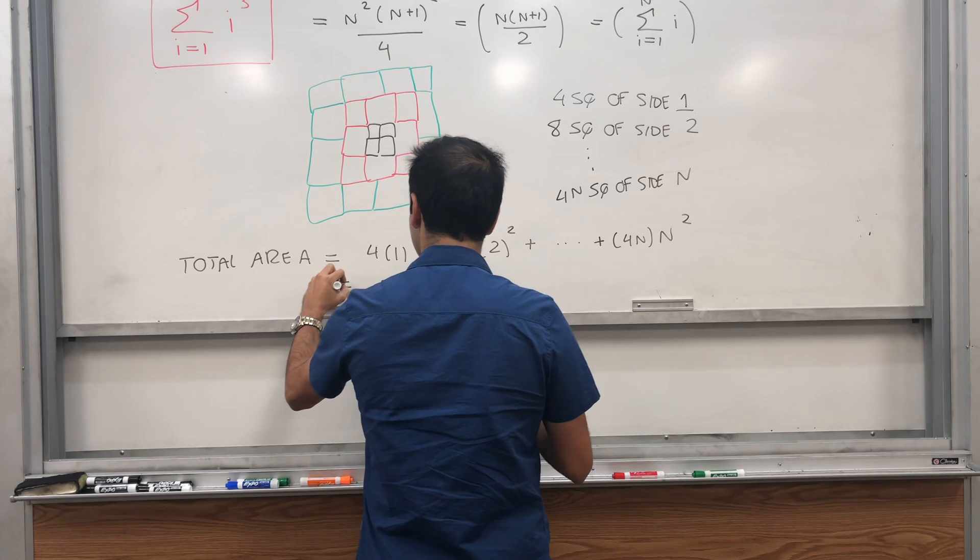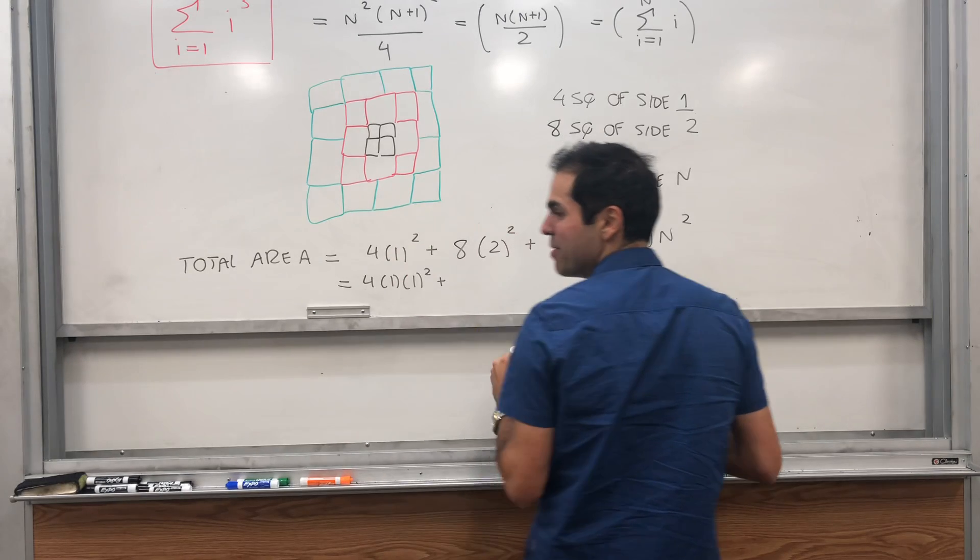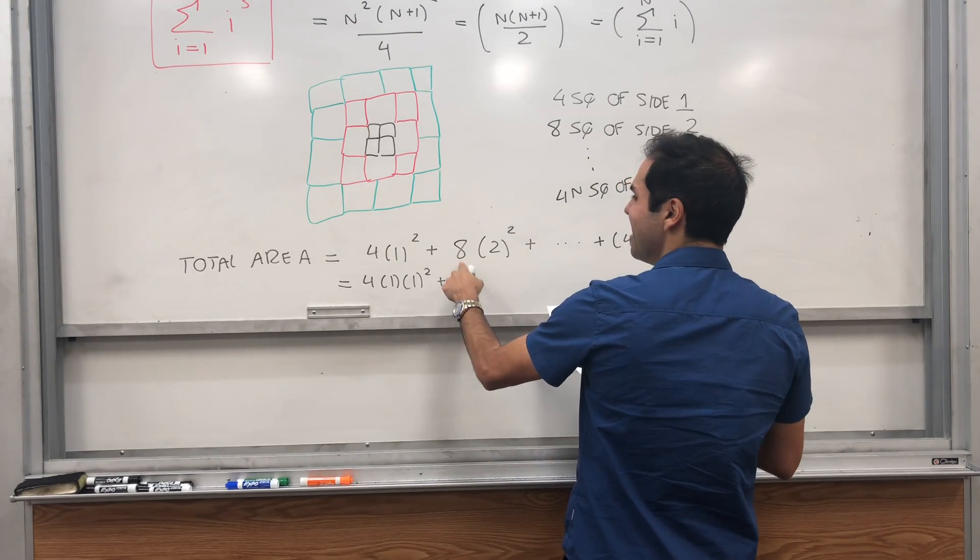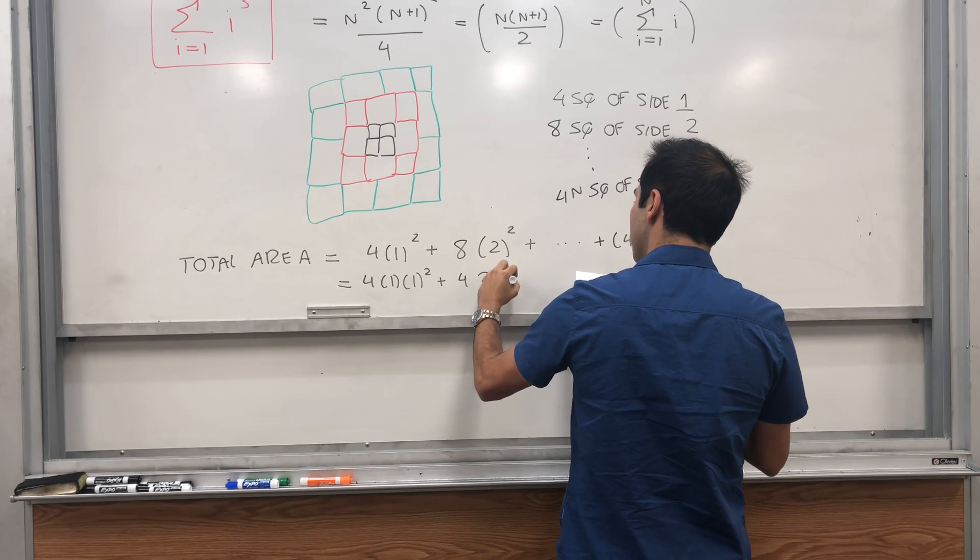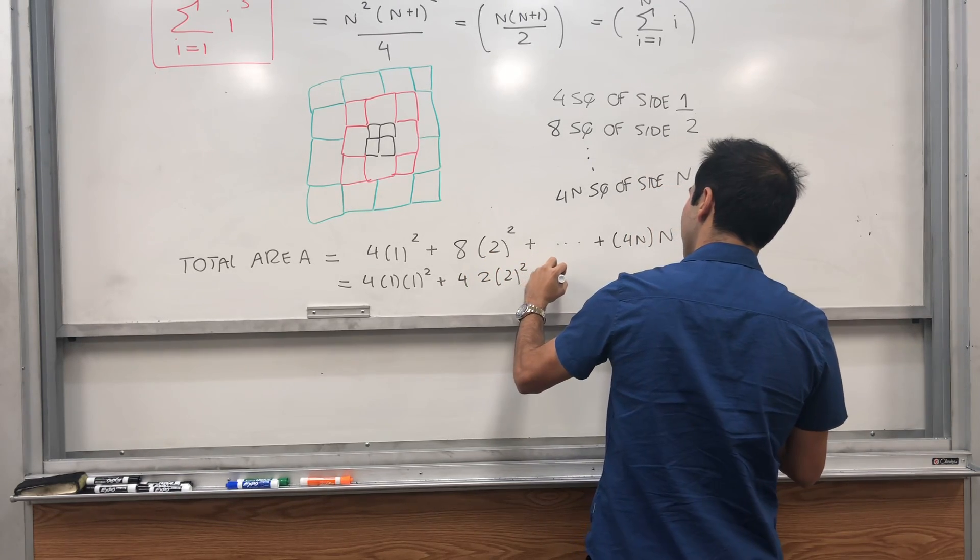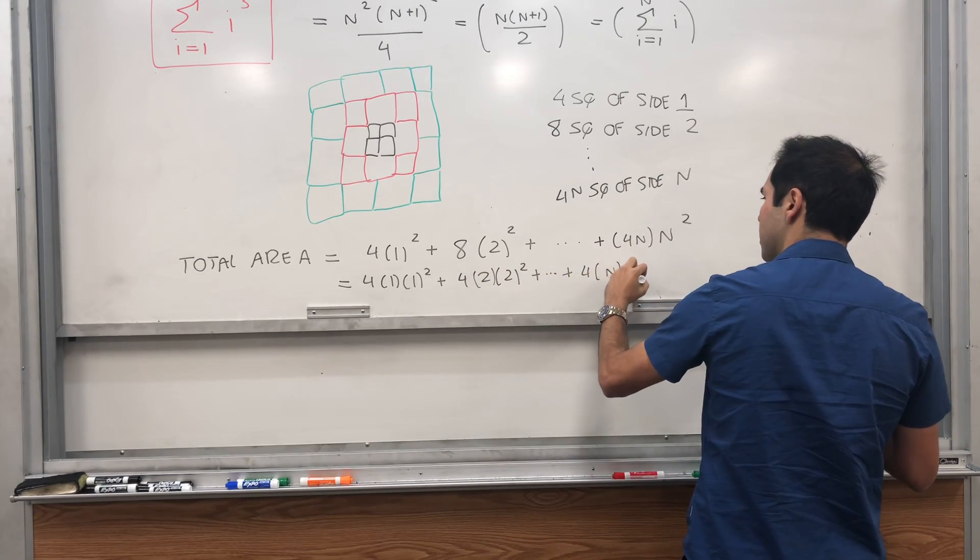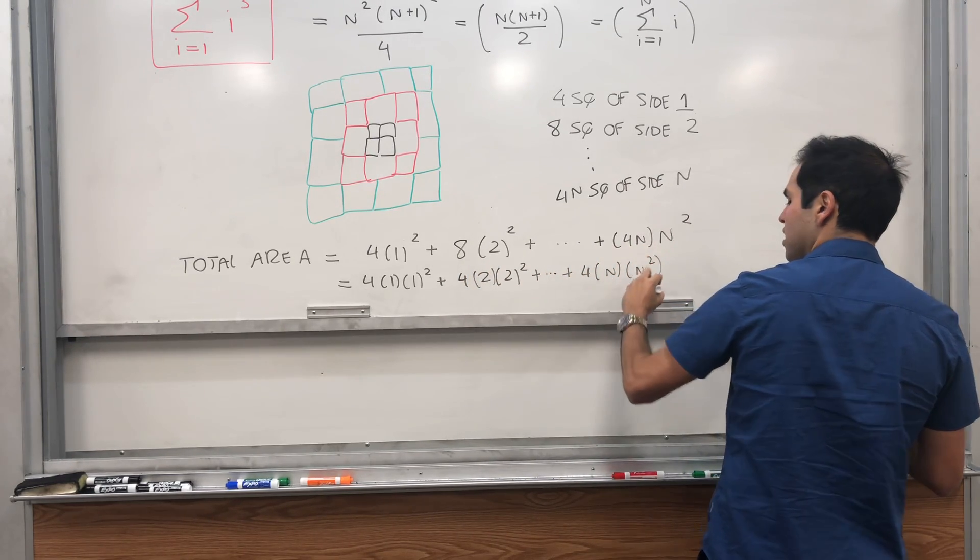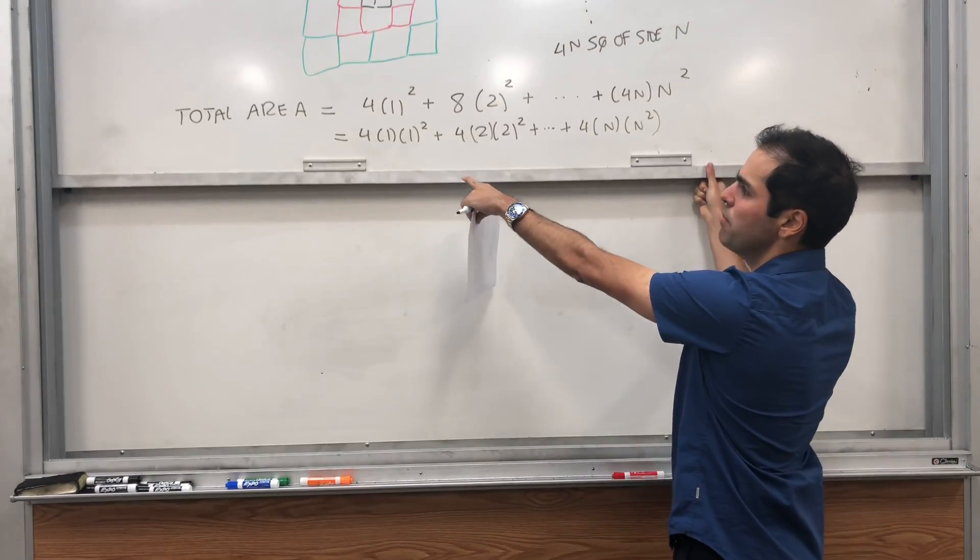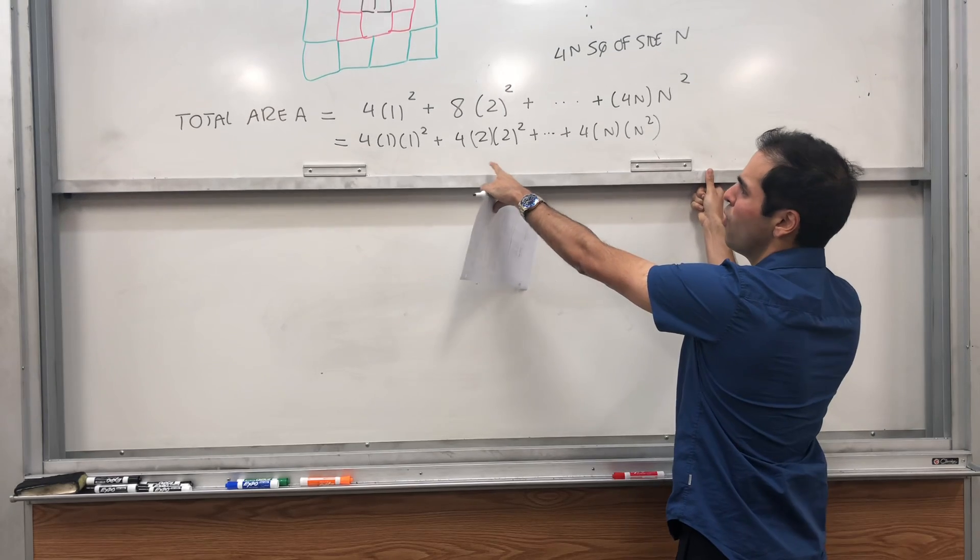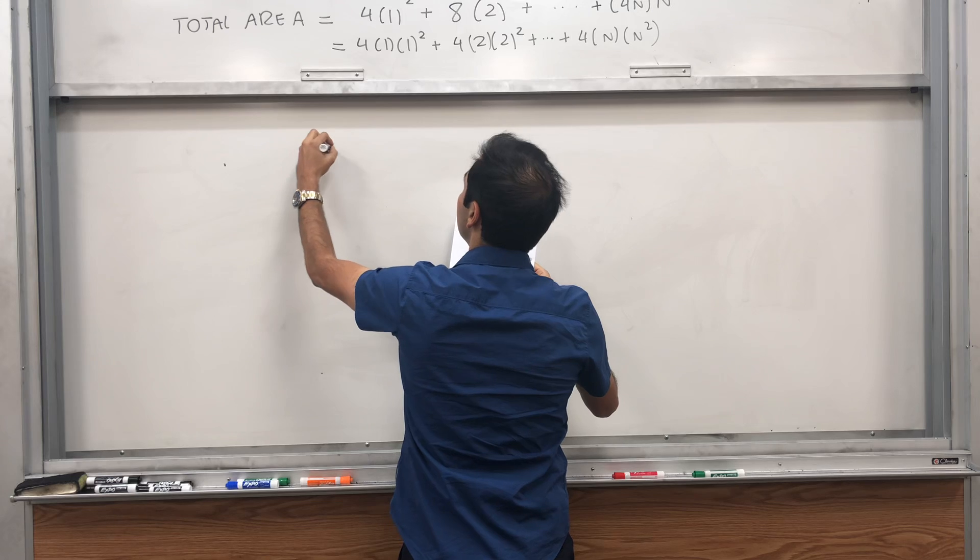Because notice, this is 4 times 1 times 1 squared. Then 8 is 4 times 2 times 2 squared plus dot dot dot plus 4 times n times n squared.